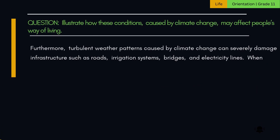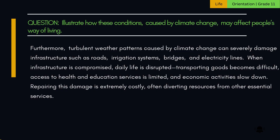Furthermore, turbulent weather patterns caused by climate change can severely damage infrastructure such as roads, irrigation systems, bridges, and electricity lines. When infrastructure is compromised, daily life is disrupted, transporting goods becomes difficult, access to health and education services is limited, and economic activities slow down. Repairing this damage is extremely costly, often diverting resources from other essential services.